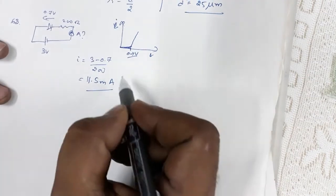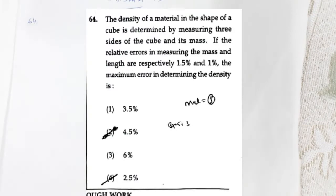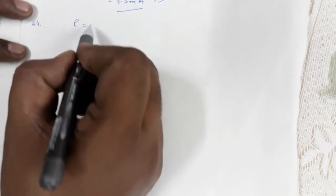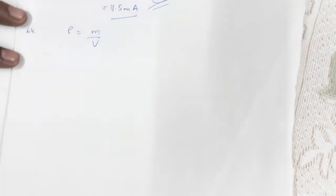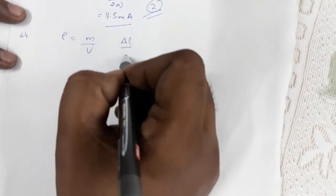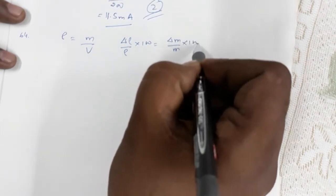For question number 63 Code C, option 2 is the correct answer — 11.5 milliamperes. Question number 64 reads: the density of a material is given, with relative error in measuring mass and length as 1.5% and 1% respectively. Find the maximum error in determining the density. Density ρ = mass/volume, and the percentage error is Δρ/ρ × 100 = Δm/m × 100 plus the volume error term.